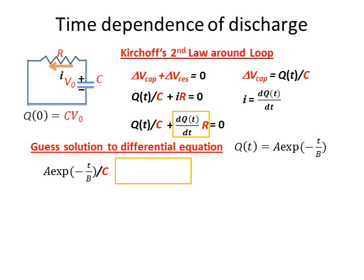But now to plug it into the second term, we need the time derivative of the charge. Taking the time derivative of an exponential is fairly straightforward. It just means bringing down the time derivative of what's inside the exponential, or minus 1 over B. So the time derivative is A divided by B, negative, times the same exponential. Plugging that in and setting that equal to zero.